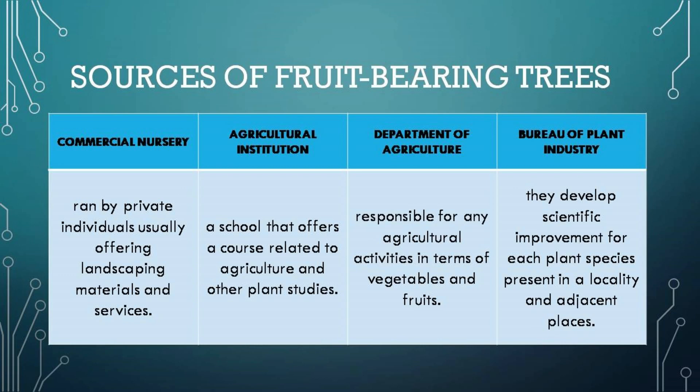Number three, Department of Agriculture, responsible for any agricultural activities in terms of vegetables and fruits. Number four, Bureau of Plant Industry — they develop scientific improvement for each plant species present in local and indigent places.